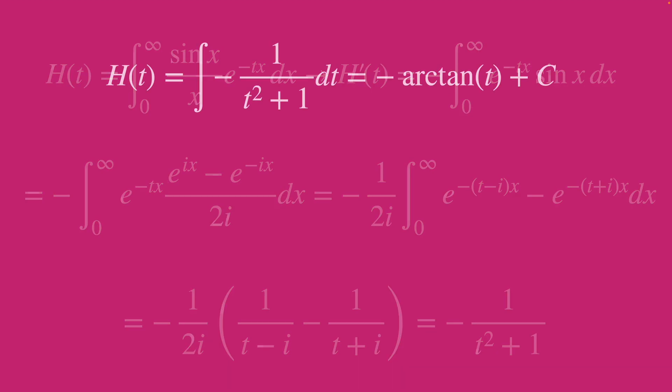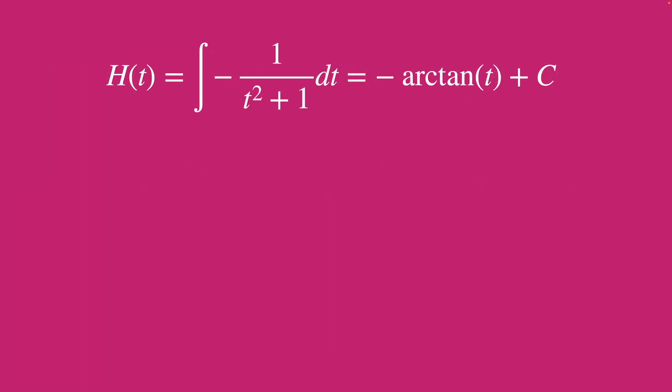We can just integrate the derivative like so to get h of t, which is our classic inverse tan plus constant hustle.